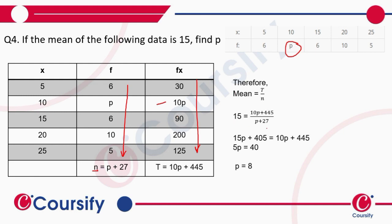All we have to do is solve for two p's. Mean is T by n, or summation fx upon summation f. So 15 - they have given the mean. T is 10p plus 445 from here, and n is p plus 27 from here.